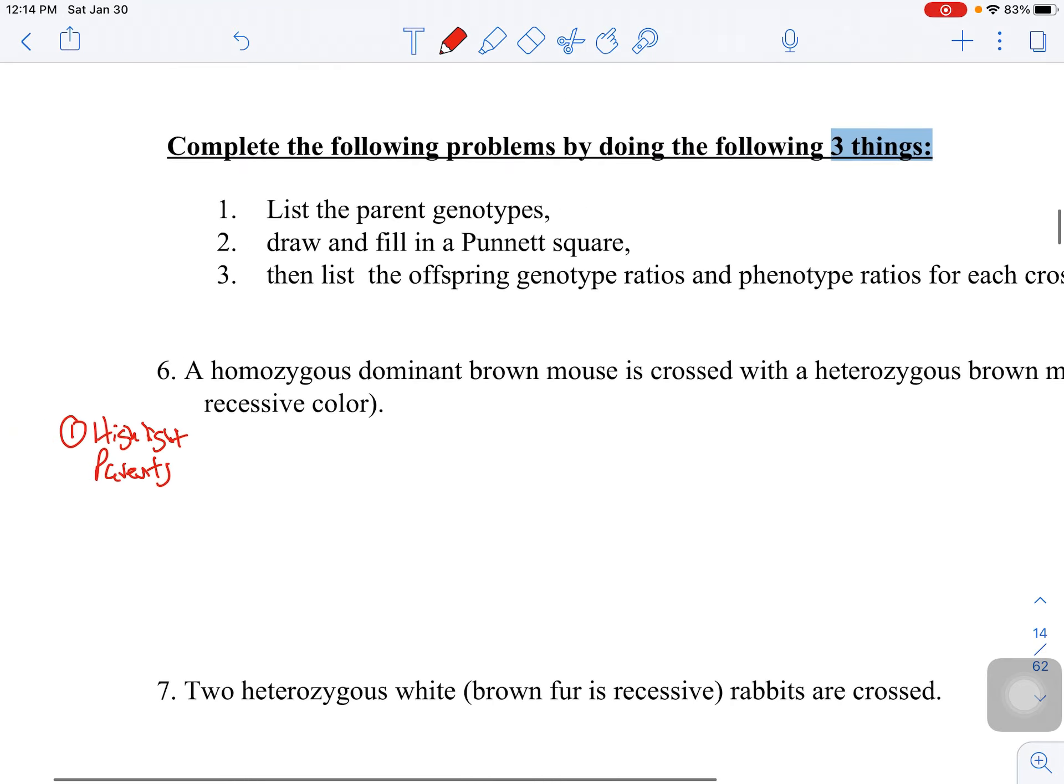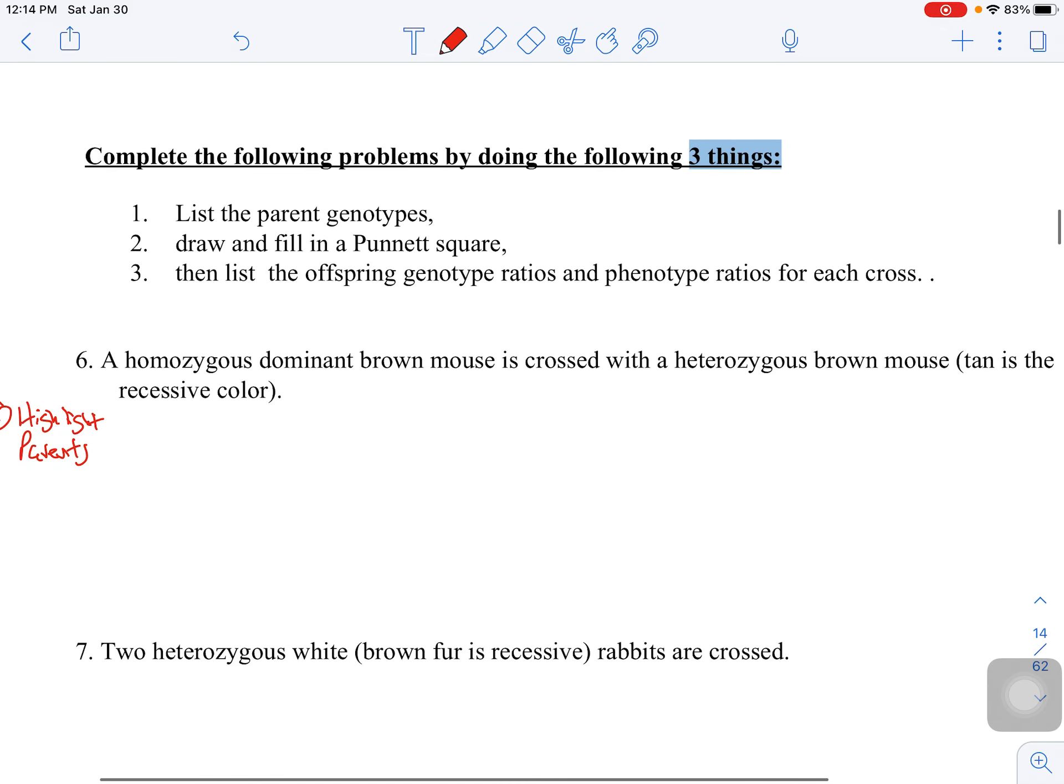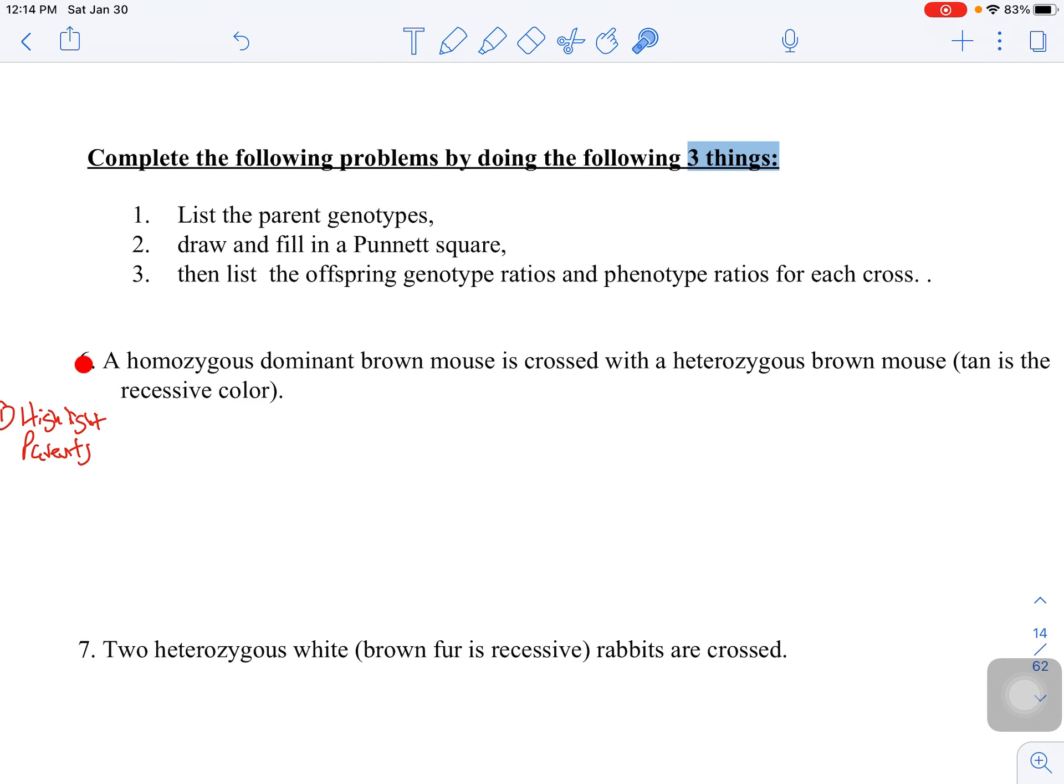So when I read this problem, I've got a homozygous dominant brown mouse that's crossed with a heterozygous brown mouse. What I want to do is simply highlight them. So I know then that really all I have to do now is just focus on the highlighted parts. When these word problems become too wordy, really trying to simplify what your mind is having to look at is super important in helping you. So just highlight the parents.